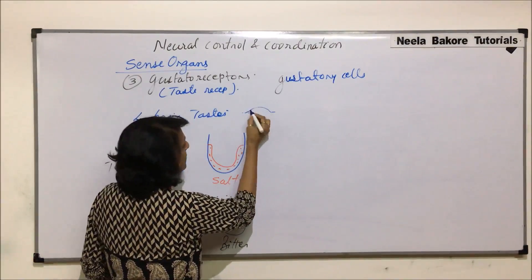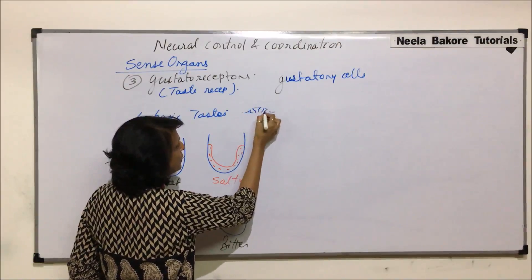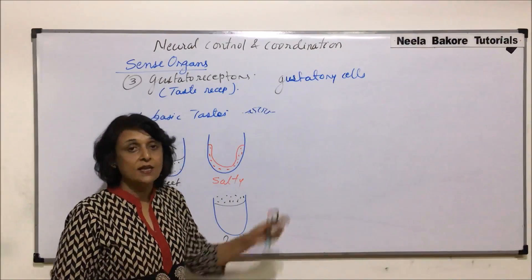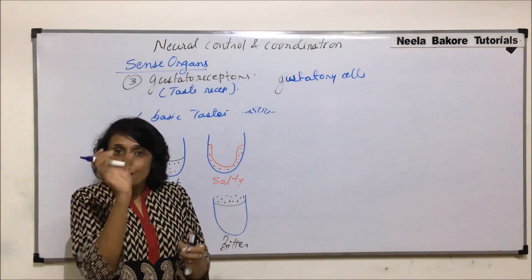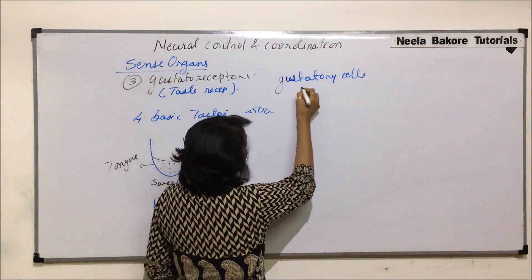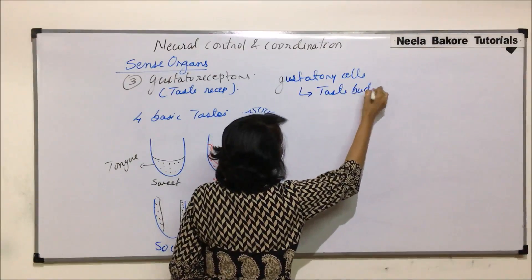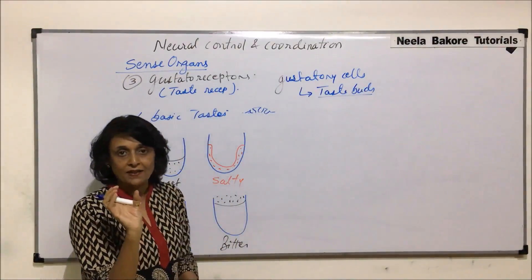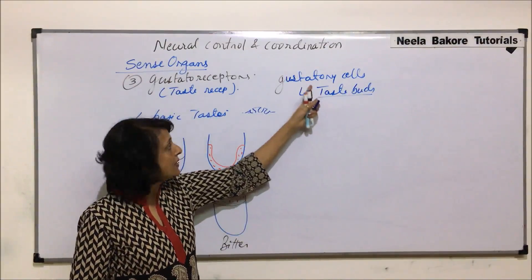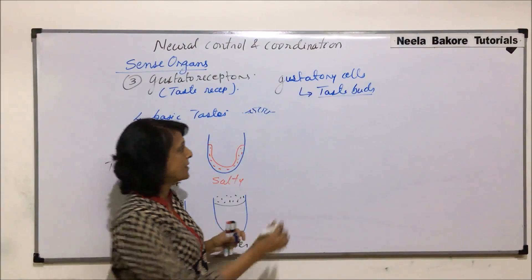On these taste papillae, one papilla may have up to 50 taste buds, and these taste buds are embedded in the epithelium of the tongue. These cells are assembled together to form a taste bud. In a taste bud, there are two types of cells: one would be the sensory cells, and the other would be the non-sensory supporting cells.